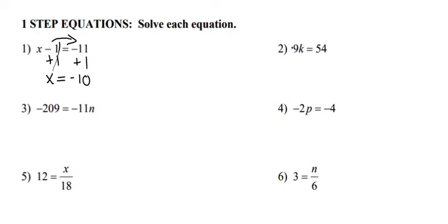For number 2, we have 9 times k equals 54. We can divide each side by 9. And we're going to get k equals 54 divided by 9 is 6.